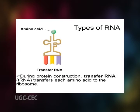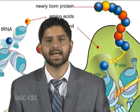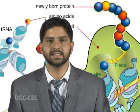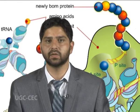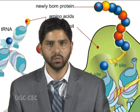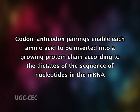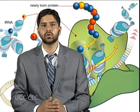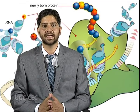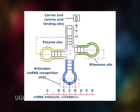Before an amino acid is incorporated into a protein chain, it is attached by its carboxy end to the 3' end of the appropriate tRNA molecule. This attachment covalently links the amino acid to the tRNA containing the correct anticodon — the sequence of three nucleotides complementary to the three-nucleotide codon that specifies that amino acid on an mRNA molecule. Codon-anticodon pairing enables each amino acid to be inserted into a growing protein chain according to the sequence of nucleotides in the mRNA, allowing the genetic code to translate nucleotide sequences into protein sequences. This is the essential adapter function of the tRNA molecule.